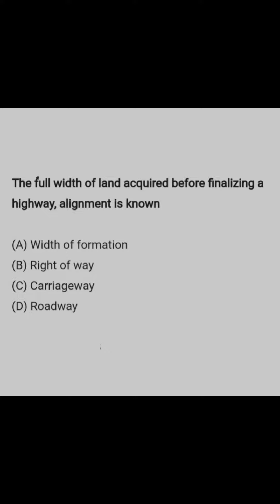The full width of land acquired before finalization of highway alignment is known as option A: width of formation, option B: right of way, option C: carriageway, and option D: roadway.